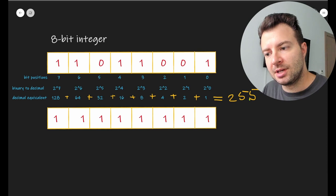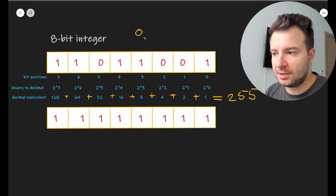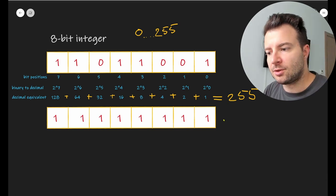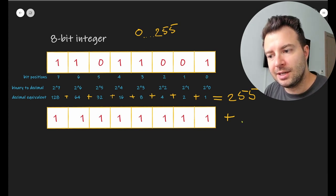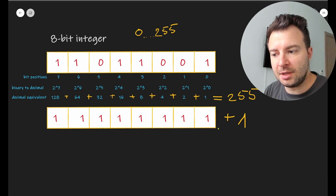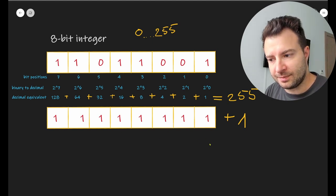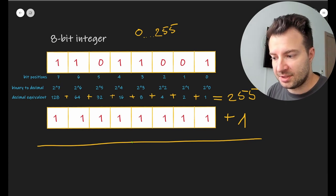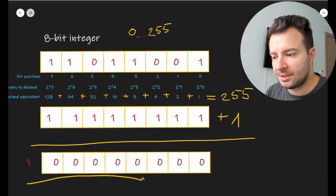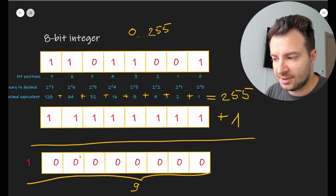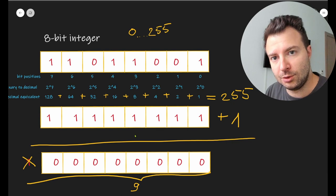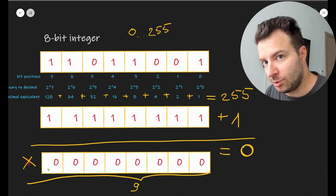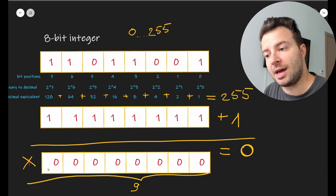The problem is: what happens if, starting from this already-maximum value, somebody tries to add one to it? Obviously we don't have enough bits to represent the resulting value, because theoretically we'd need a 9-bit number. What happens is that the extra bit generated is eliminated and ignored, and the actual result is a big round zero — which is probably not what you would expect if you didn't program for this specifically.